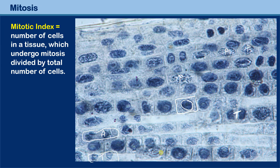This one here is anaphase, and here you also have something between telophase and anaphase — I would say probably telophase. Anything else is again prophase. I don't see any metaphase cells here. This one could also be a late telophase — you can still see some chromosomes in it.